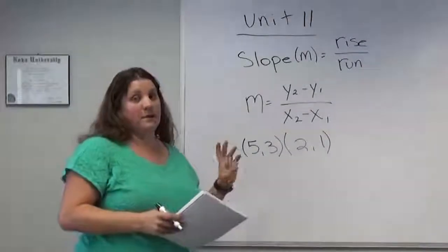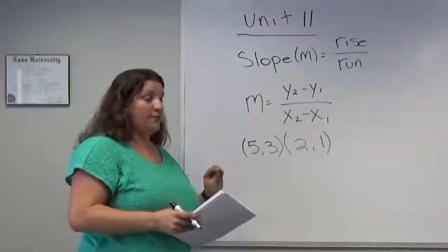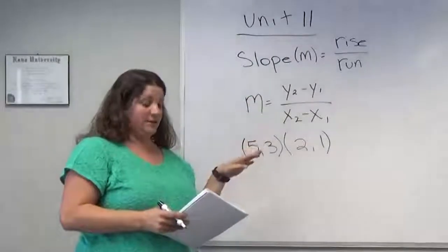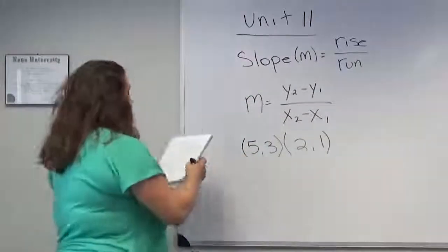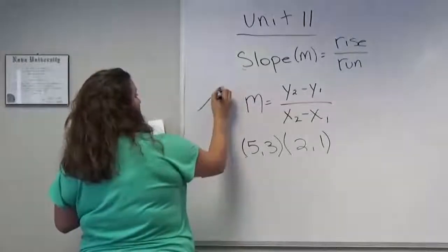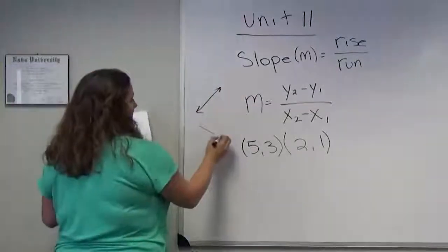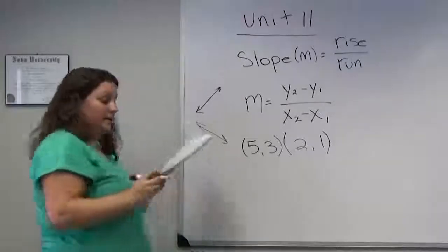A horizontal slope has a slope of zero. A vertical line has an undefined slope. If the line leans to the right, it's a positive slope, and if it leans to the left, it's a negative slope.